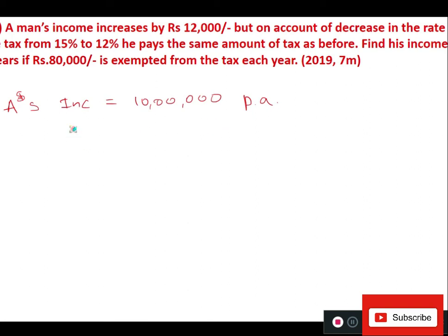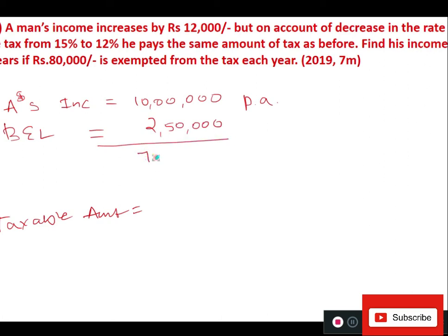Mr. A's income is ₹10 lakh per year. First, we need to find the taxable amount. The basic exemption limit is ₹2,50,000, so he pays tax on ₹7,50,000. This is the taxable amount. Additionally, if he has made investments, he may get further exemptions — there are also default exemptions given by the government, which we will learn next year.